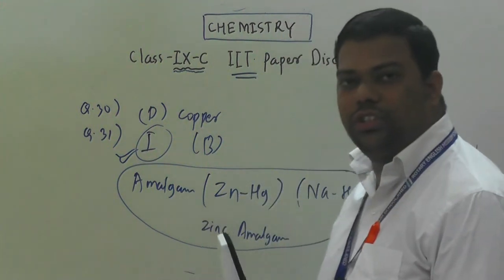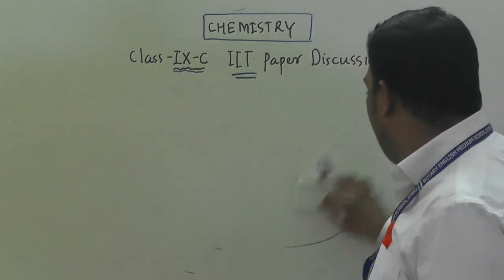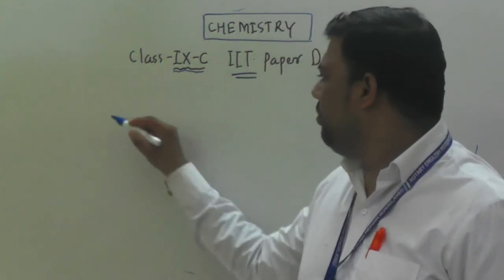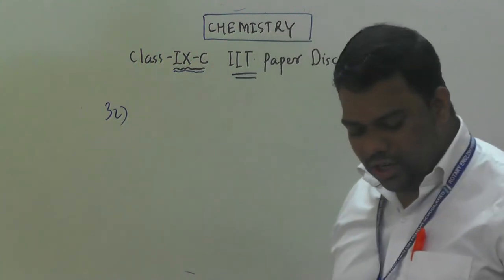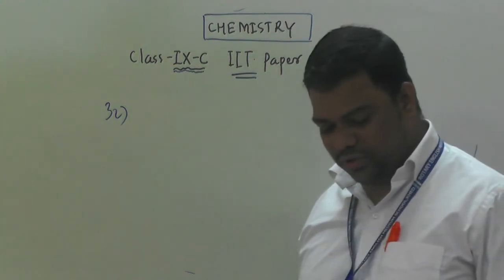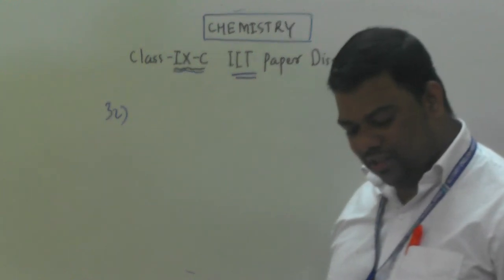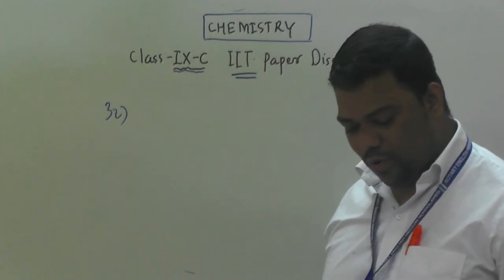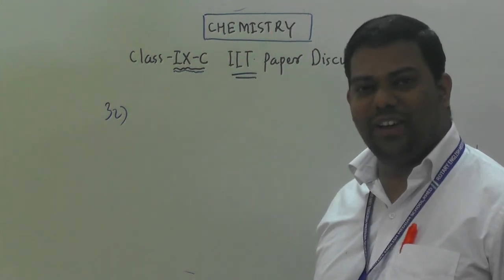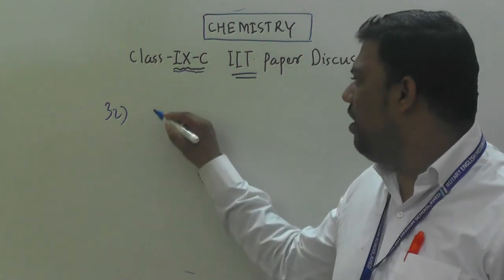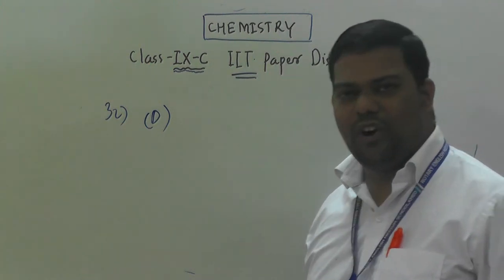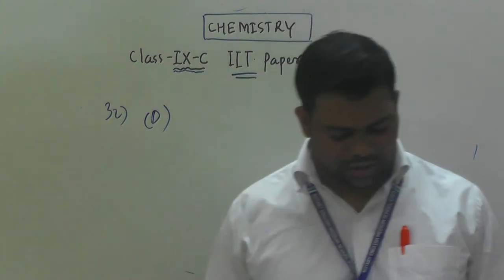We covered questions 30 and 31. Now question number 32: in which of the following cases is cooking very slow? A pressure cooker at sea level — no. Pressure cooker at higher altitude — no. Open vessel at higher altitude — yes, cooking rate is slow. So option D: open vessel at higher altitude.